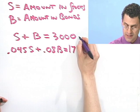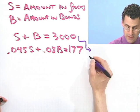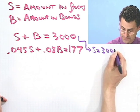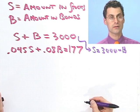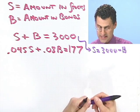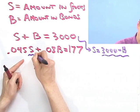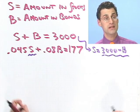If I do that, what I see is S equals 3,000 minus B. And now what I can do is take that value for S and insert it right here. And then I would get rid of the S and I would just have Bs.